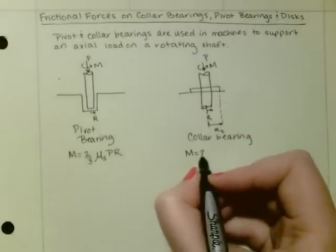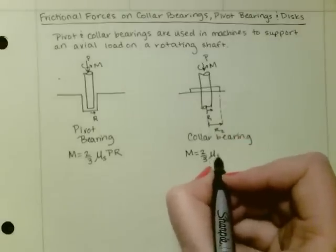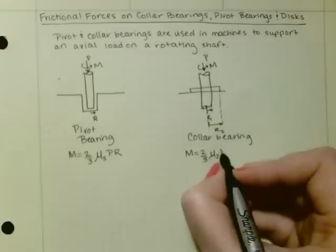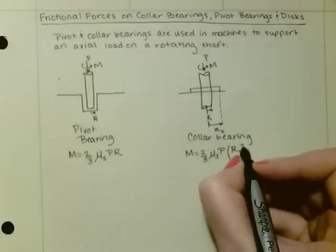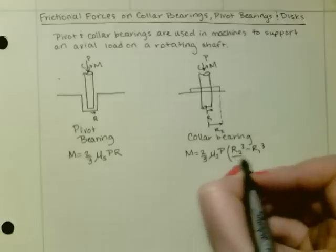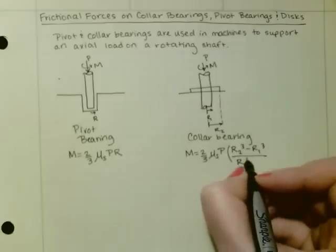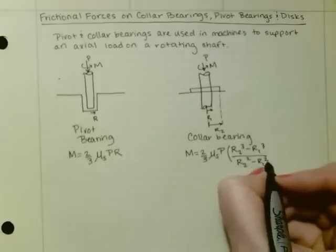And in this case, our moment is equal to two-thirds times the coefficient of static friction times P times R2 cubed minus R1 cubed, divided by R2 squared minus R1 squared.